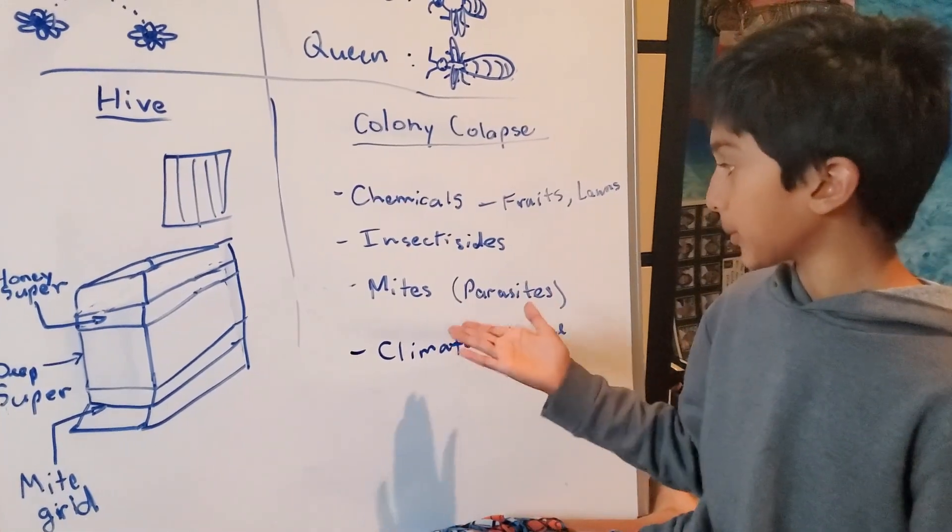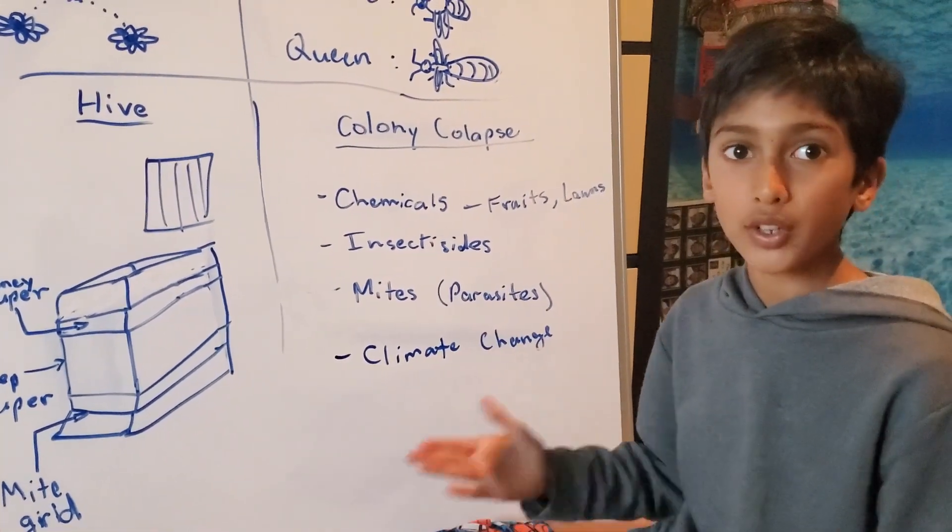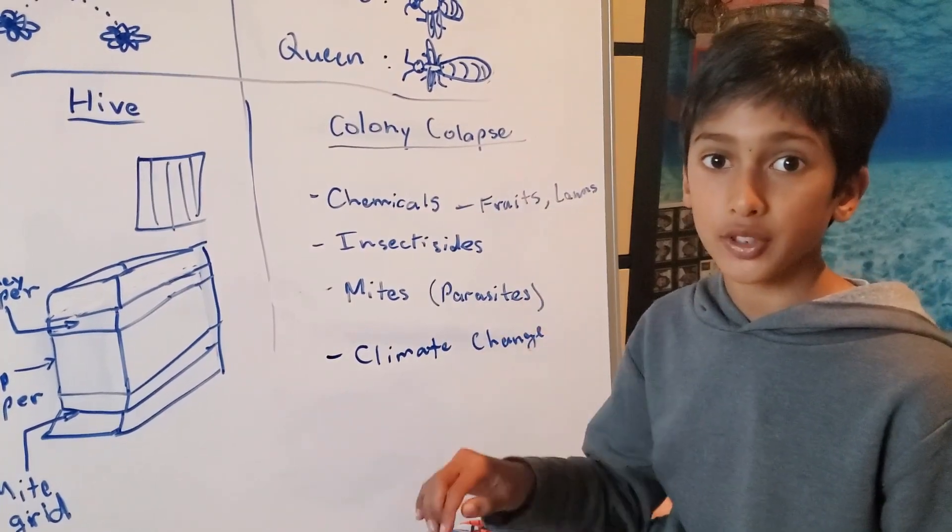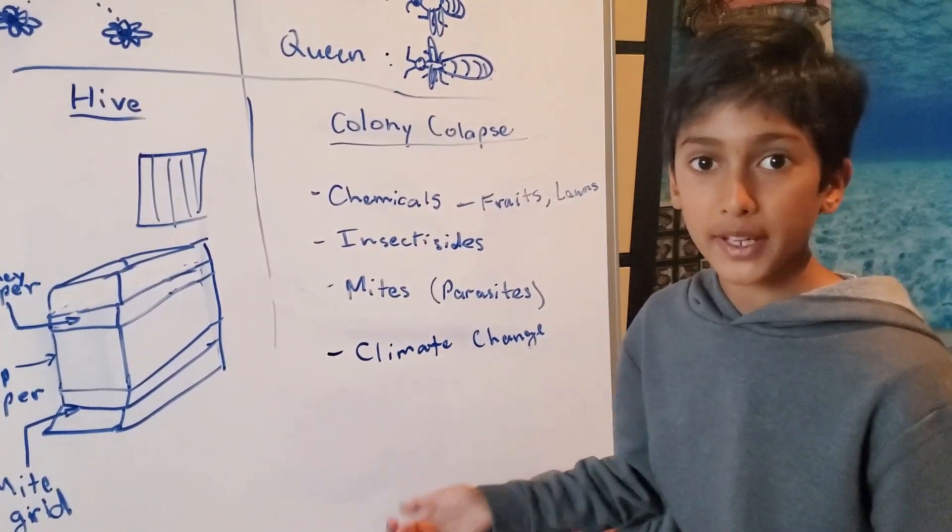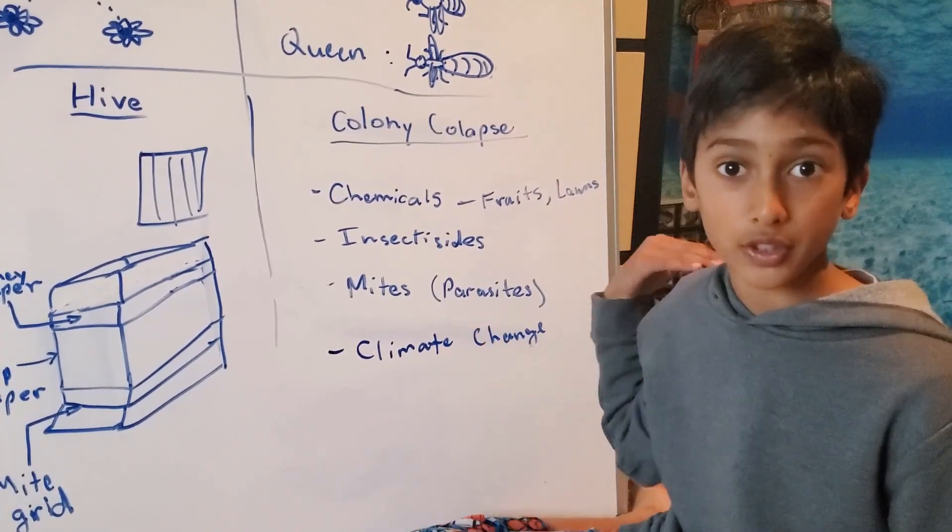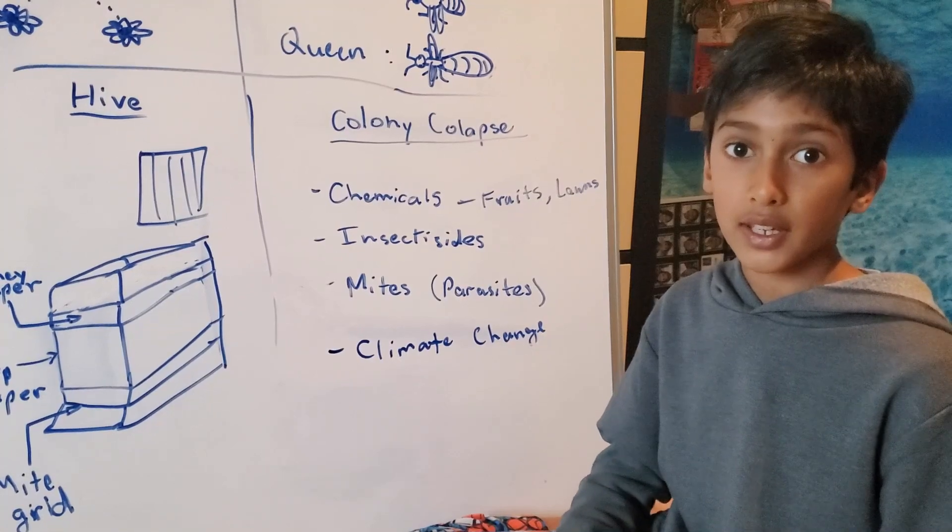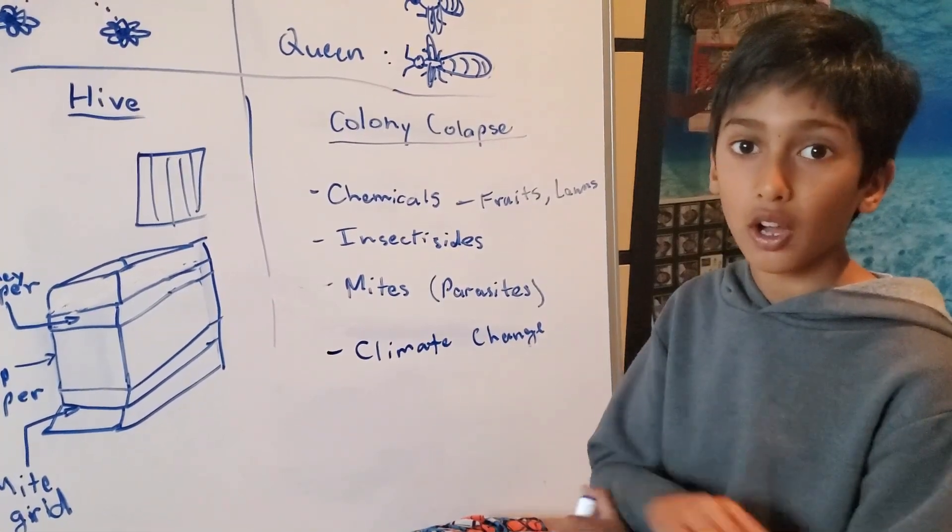And then there are certain types of mites that want to kill only bees. So when a bee climbs onto the flower to collect some pollen, that mite climbs onto the bee. The bee takes it back to its colony and the mite eats all of the bees.